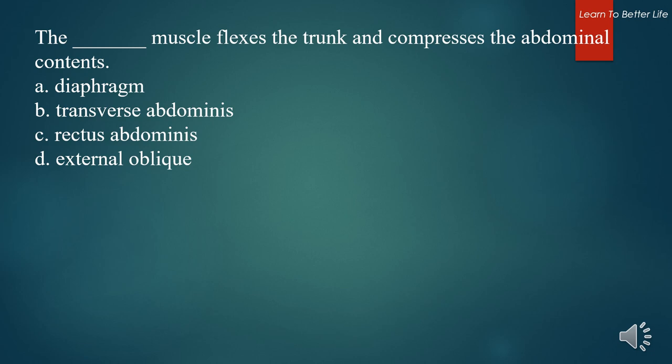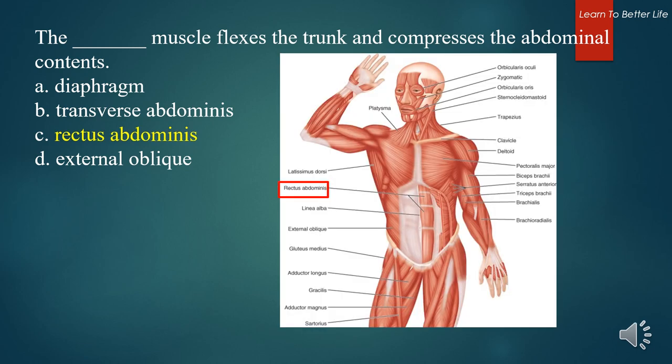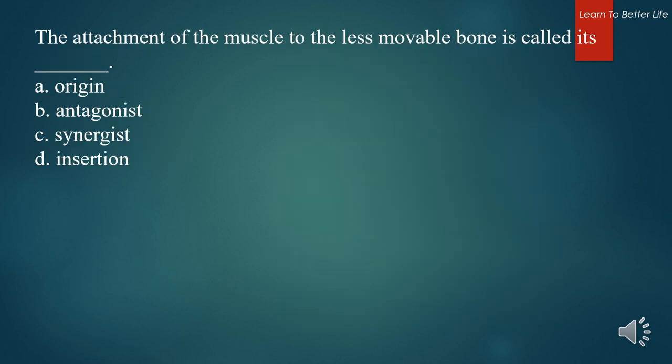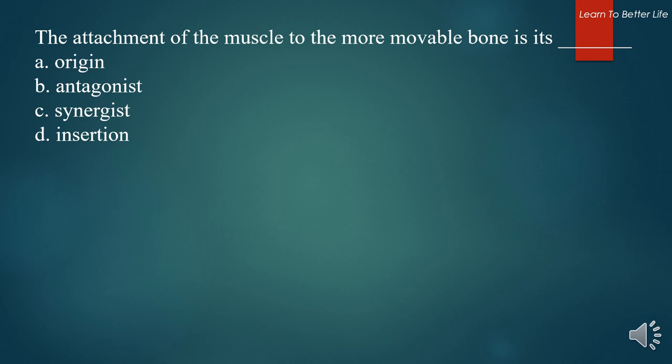What muscle flexes the trunk and compresses the abdominal contents? A. Diaphragm. B. Transverse abdominus. C. Rectus abdominus. D. External oblique. The answer is C. Rectus abdominus. The attachment of the muscle to the less movable bone is called its what? A. Origin. B. Antagonist. C. Synergist. D. Insertion. The answer is A. Origin. The attachment of the muscle to the more movable bone is its what? A. Origin. B. Antagonist. C. Synergist. D. Insertion. The answer is D. Insertion.